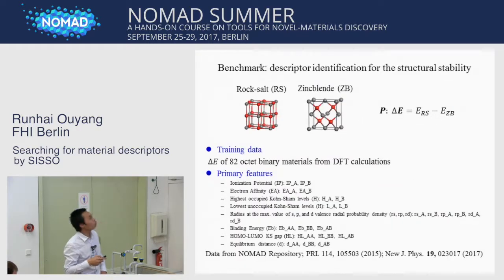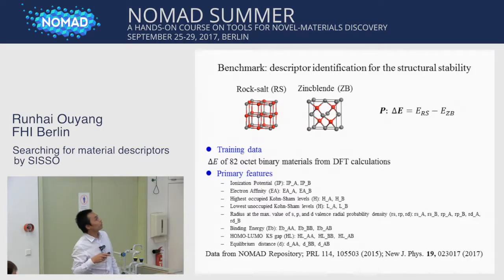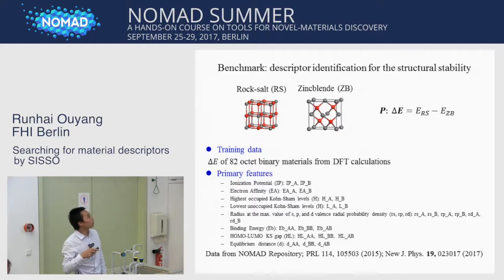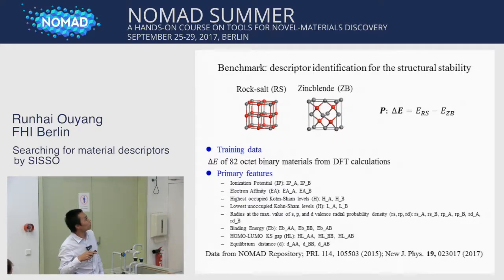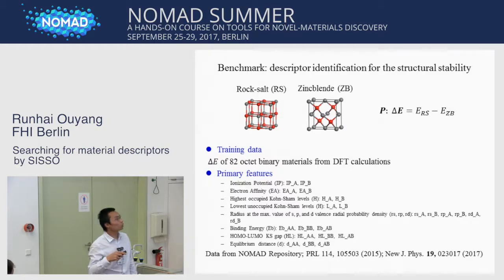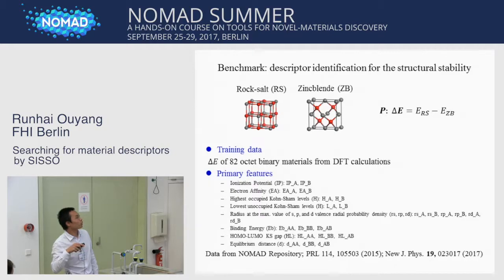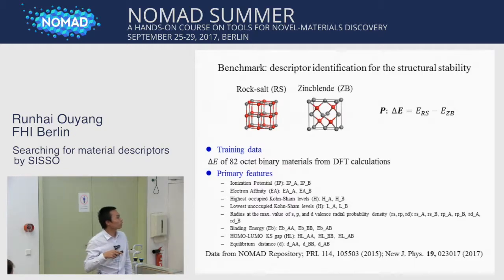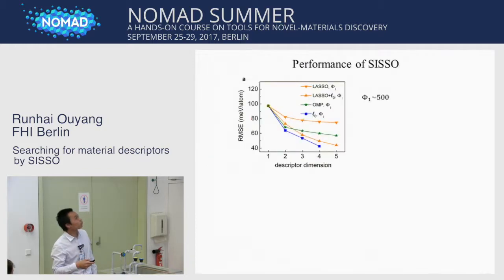Now let's see a benchmark: descriptor identification for structural stability. The property is the energy difference between two structures. For training data, we take 82 energy differences between binary materials from DFT calculations. The primary features — input variables — are atomic parameters such as ionization potential, electron affinity, and so on. All data are obtained from the NOMAD repository or this paper.